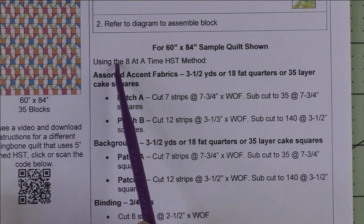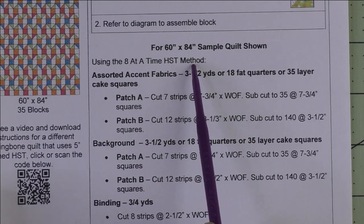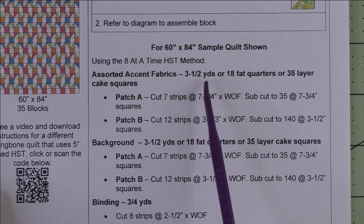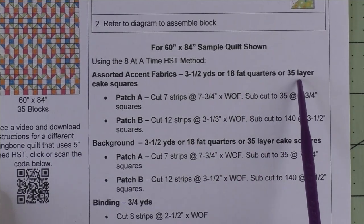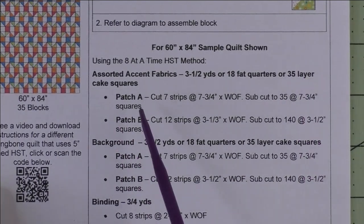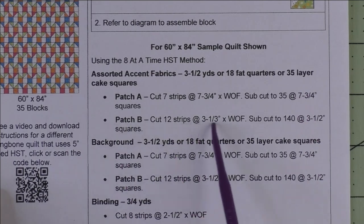This is using the eight at a time half square triangle method. Assorted accent fabrics, you'll need a total of three and a half yards or 18 fat quarters or 35 layer cake squares, so you have a lot of options here. This tells you how many to cut of patch A and how many to cut of patch B.